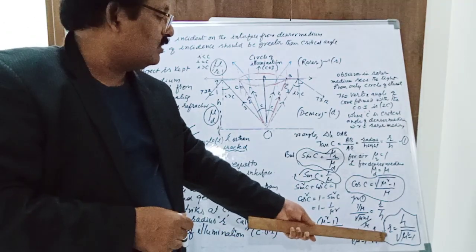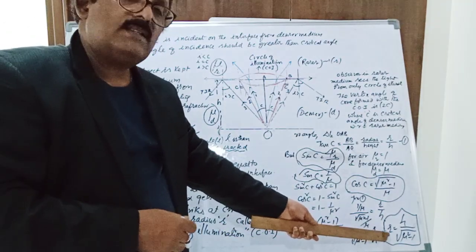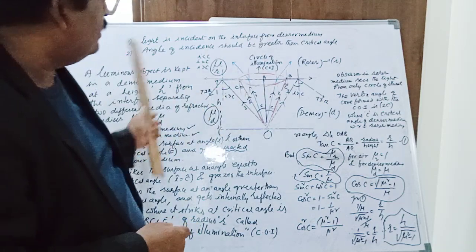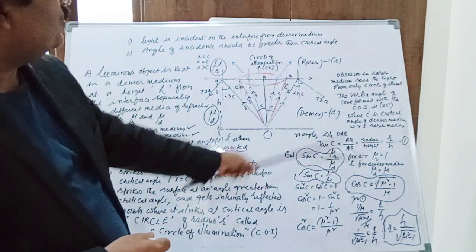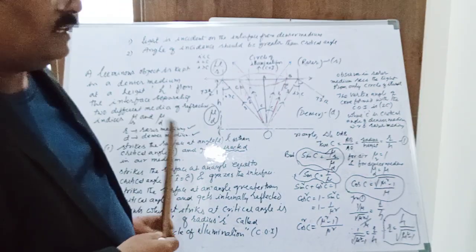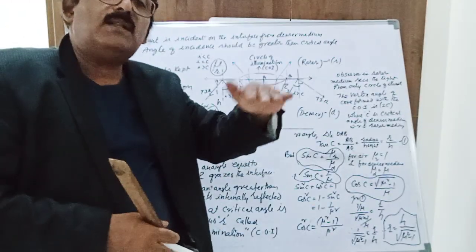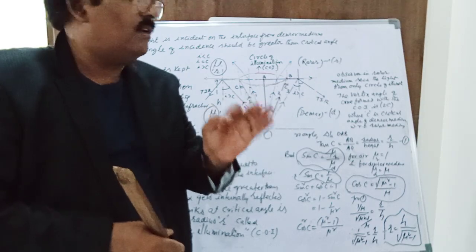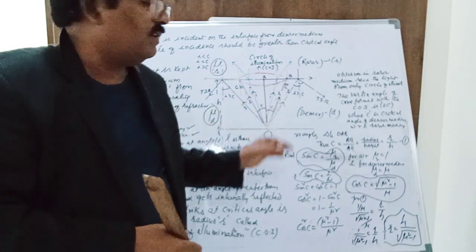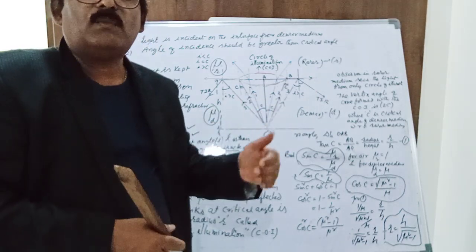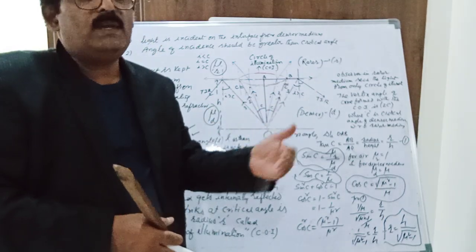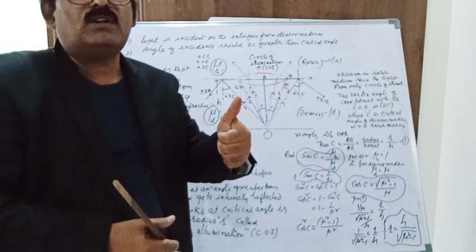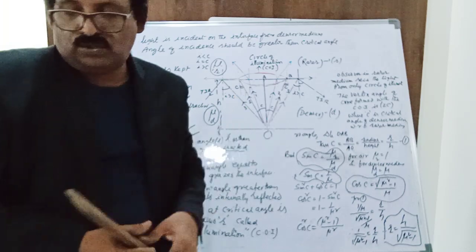This is a very important formula. The radius of the circular aperture r equals the height h of the illuminated object from the surface divided by √(μ² − 1), where μ is the refractive index. This is a very useful derivation for solving problems related to refraction at plane surfaces.